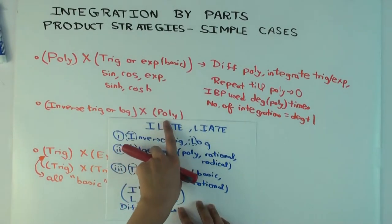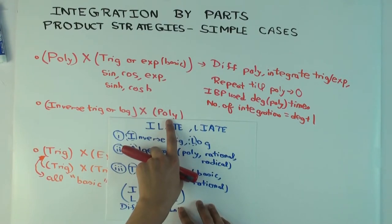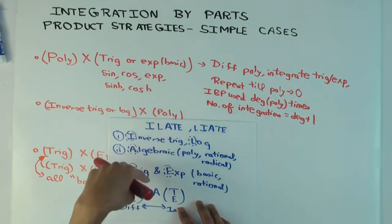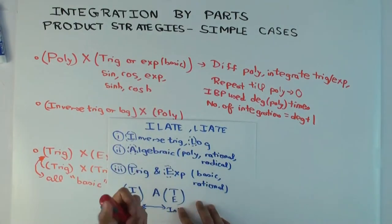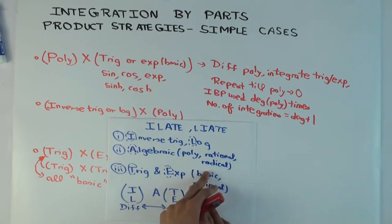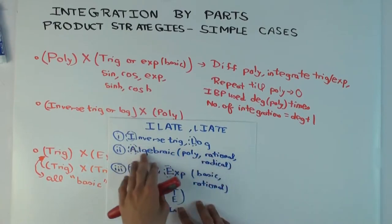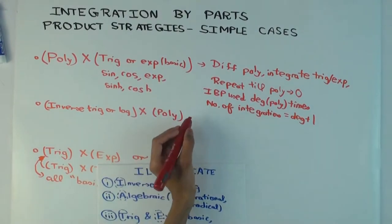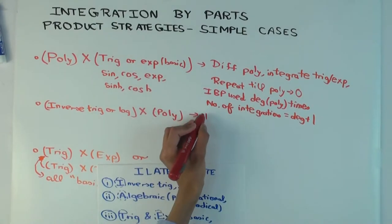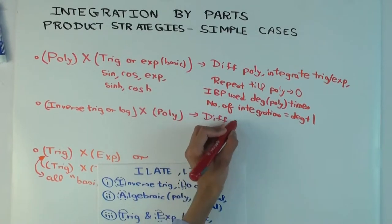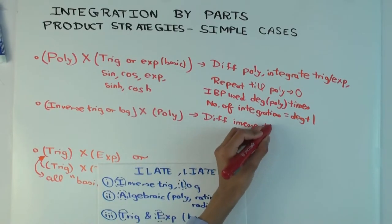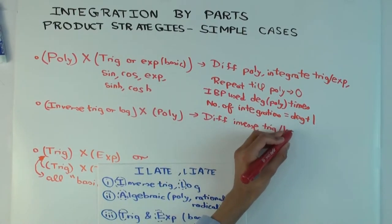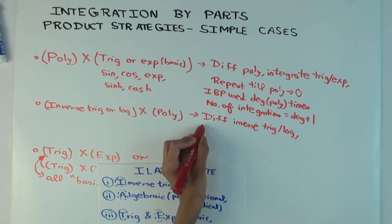The polynomial, when you integrate, what do you get? You get another polynomial, it's still algebraic. So the new integration you'll have will be polynomial times rational function, which is purely a rational function, or polynomial times radical, which is just purely an algebraic integration.